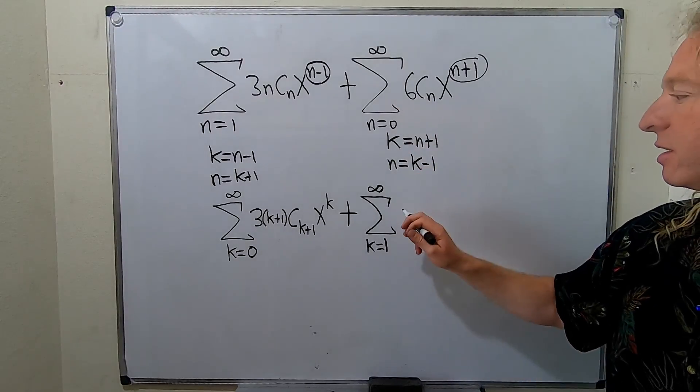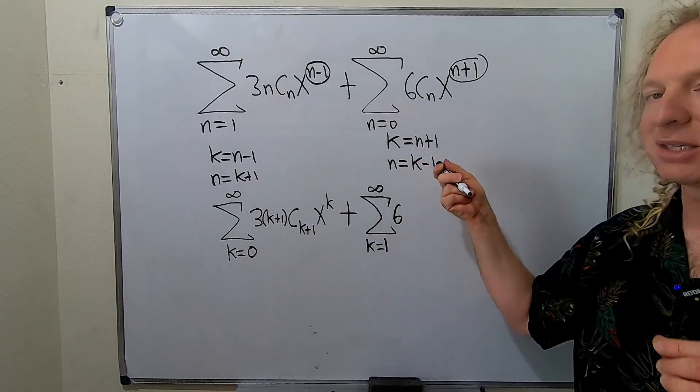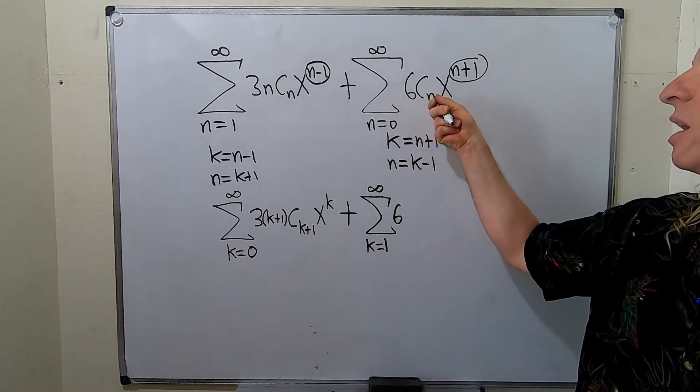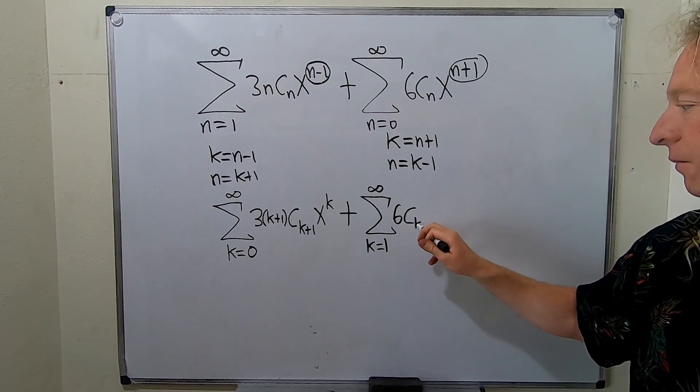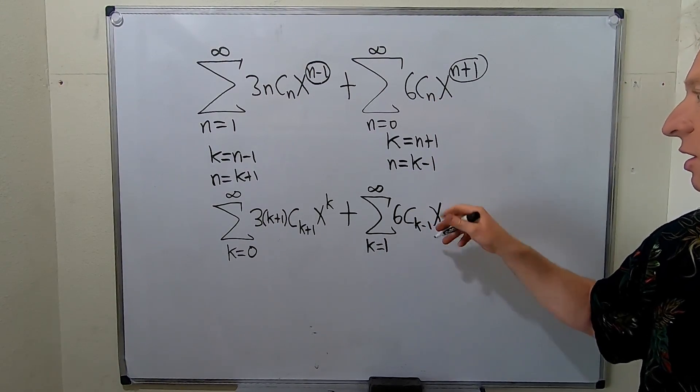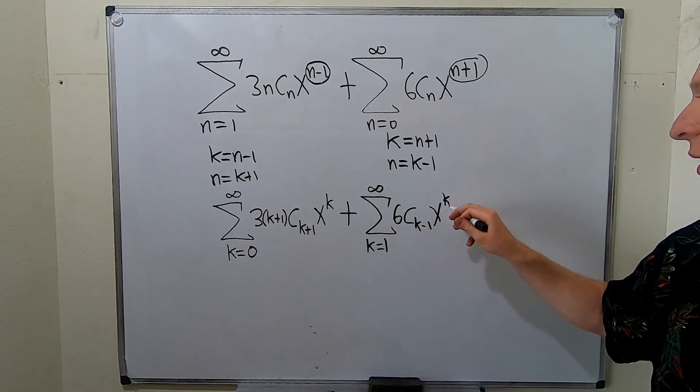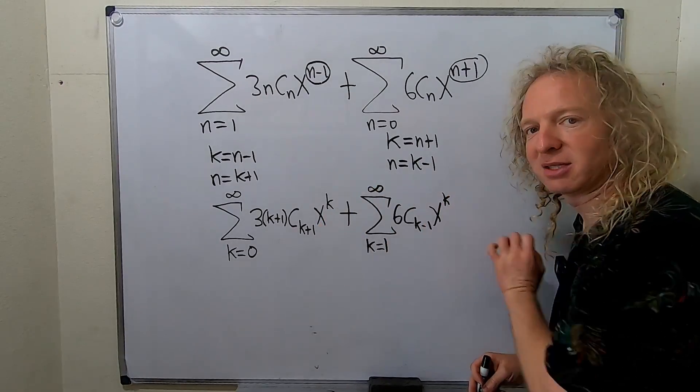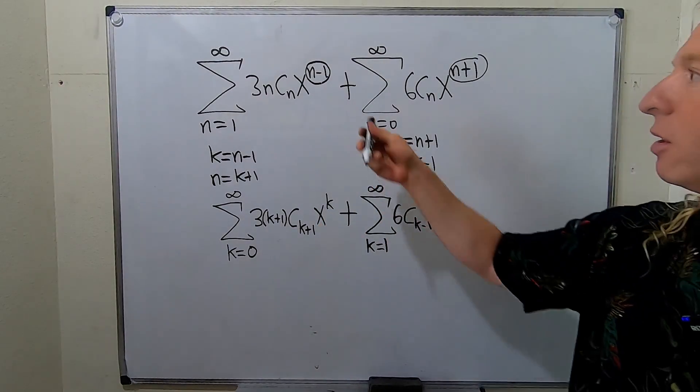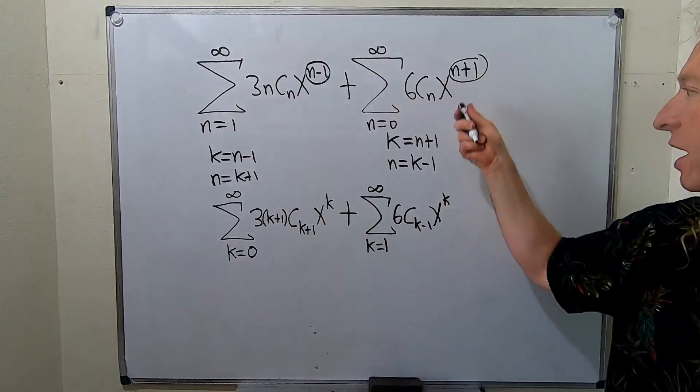Then we still have the 6. And n is k minus 1. So we get C sub k minus 1. And then x to the k. That's the whole point. The whole point is to make these x to the k's. So recap: Call it k, solve for n. Call it k, solve for n.